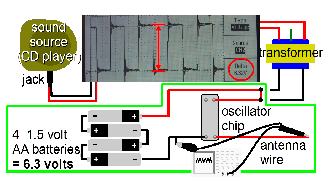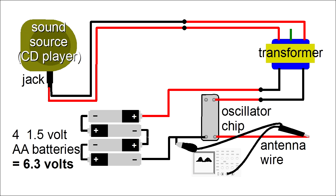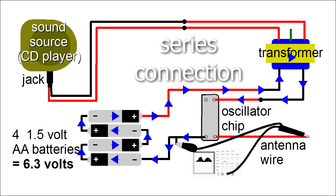But with the circuit complete, the oscillator now gets its input from what the batteries and transformer together supply it. What is that? The batteries and transformer are connected with what is called a series connection. And when you connect things in series like this, their voltages add up.